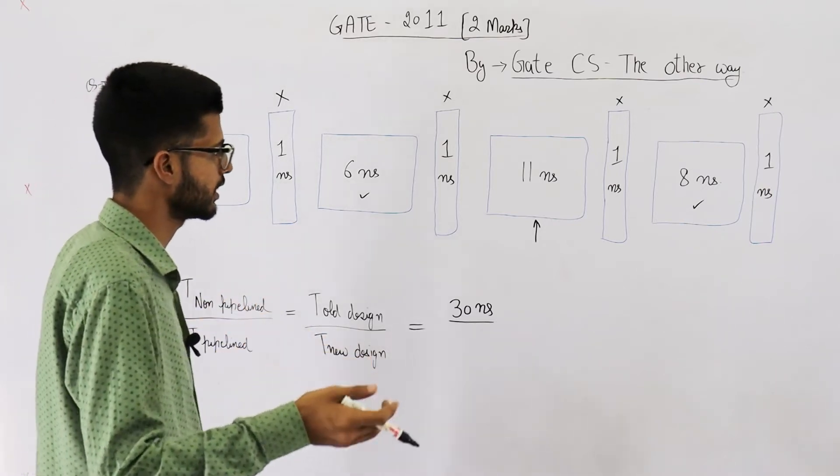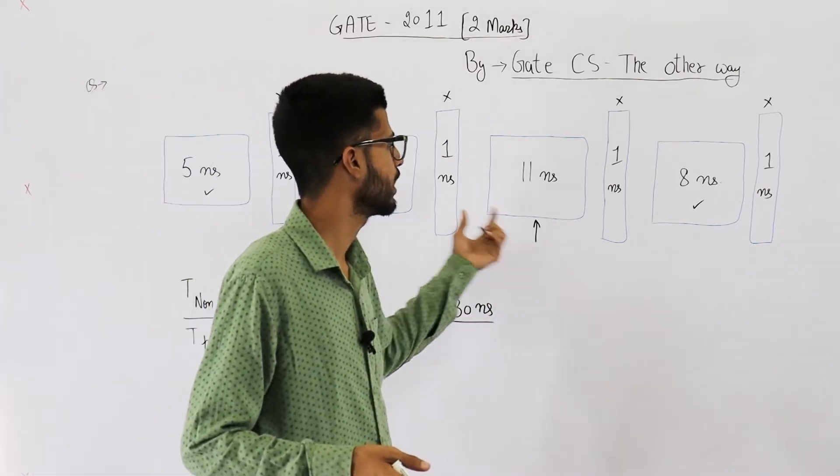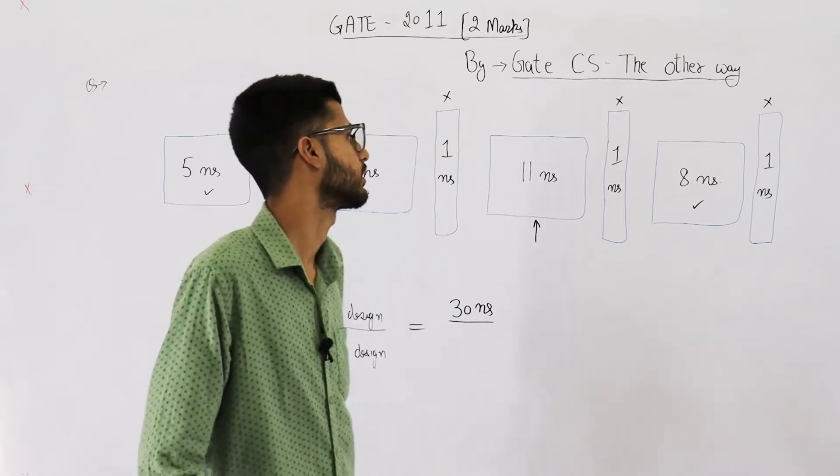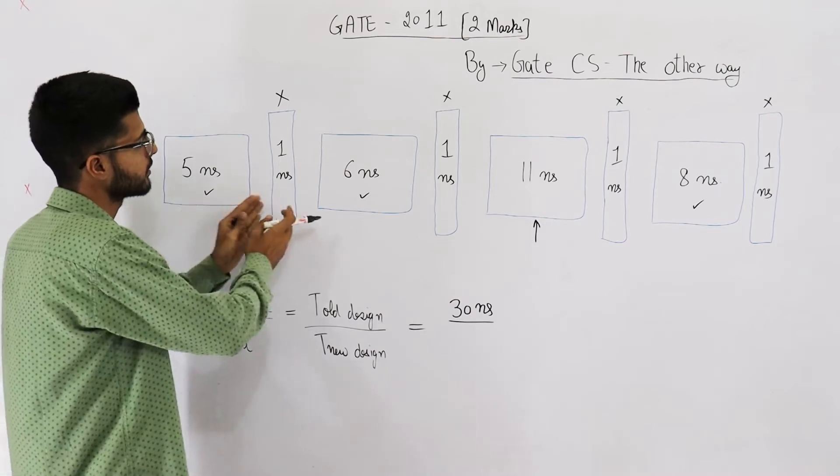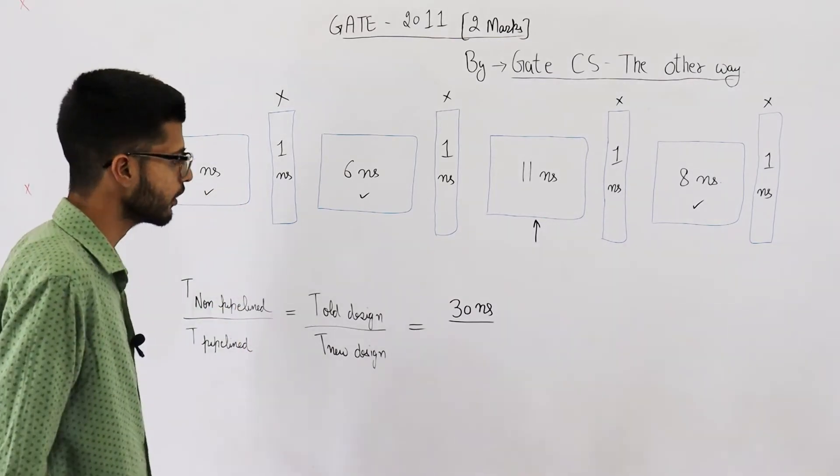So to just keep even delays, we assume every stage requires 11 nanoseconds. And whichever stage finishes before 11 nanoseconds, they place their data in a buffer.